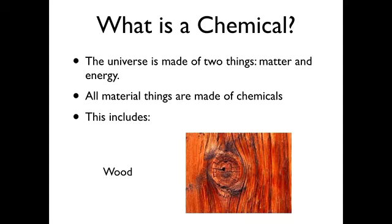Wood is a very important biological chemical — deceptively simple for all the many different things you can do with it. Wood is mostly made out of glucose. It's a polymer of glucose with an interesting chemical arrangement, and it's not just a polymer of glucose; there's more in wood than just cellulose. But its primary component is basically sugar. That log you're looking at is mostly sugar, and sugar is very definitely a chemical.